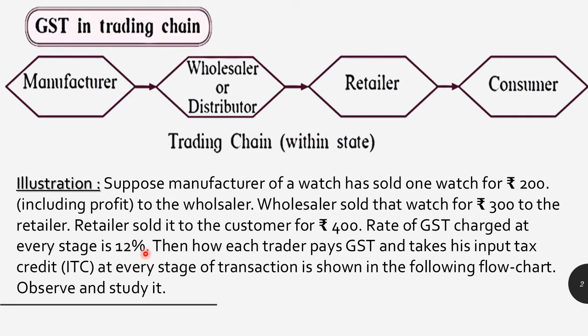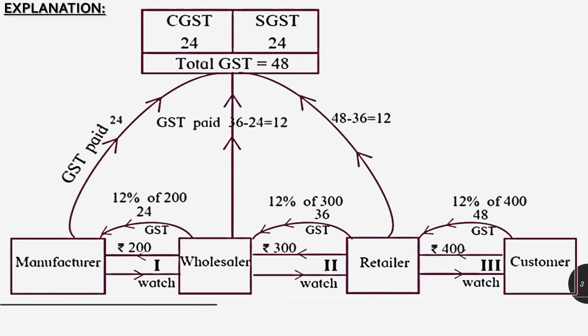Now how the calculations happen — how much each one of them contributes — and finally the product or service is used by the consumer, so indirectly the full tax is actually paid by the consumer only. We will see how it is paid and how all that money is redeemed from the consumer. Now, how each trader pays GST and takes their input tax credit (ITC) at every stage of transaction is shown in the following flowchart.